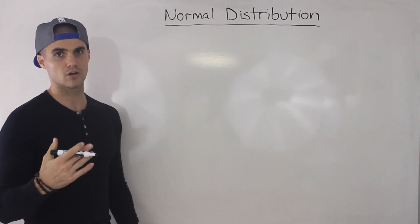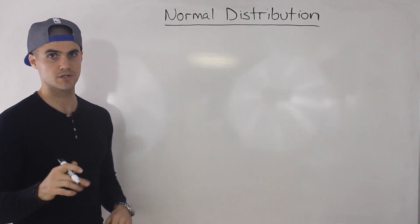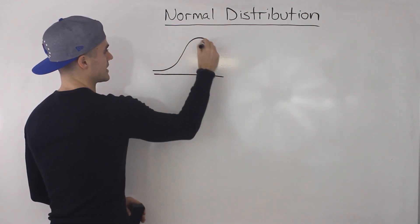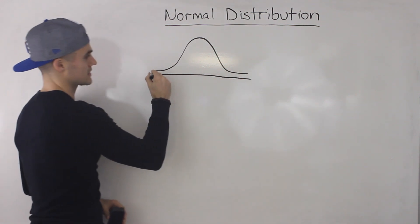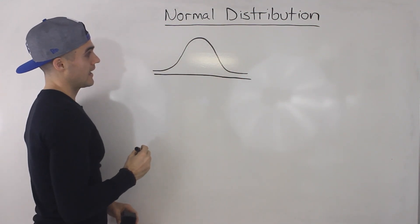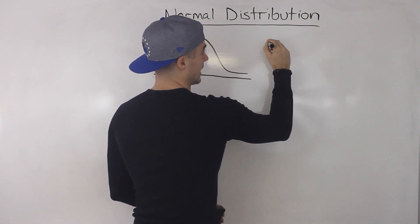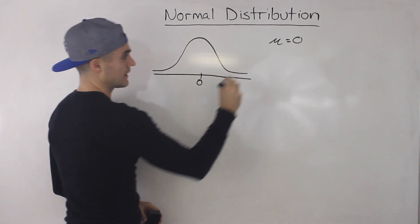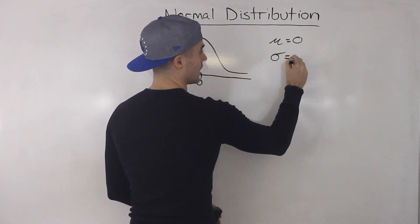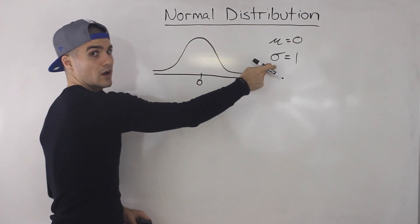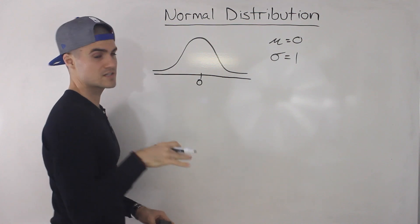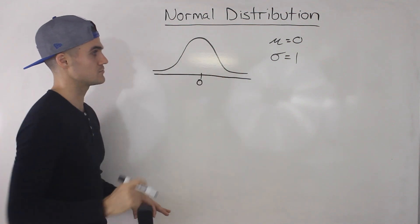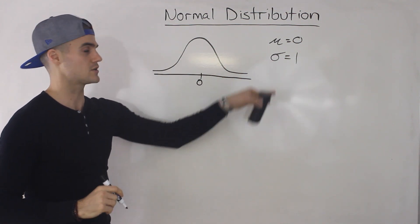A normal distribution can also be called a Gaussian distribution or a Z-distribution, and you've probably already seen it, whether in class or in your textbook. It basically takes this kind of shape here — it's like a symmetrical bell curve. This normal distribution has a mean of zero, so zero is right in the middle of it, and it also has a standard deviation of one. We're not going to talk about that too much in this video. I'm going to focus more specifically on the symmetry of this distribution. I'll talk about the standard deviation in a future video.